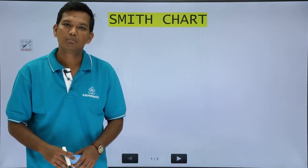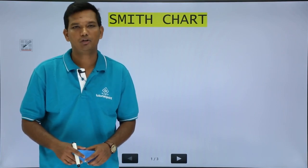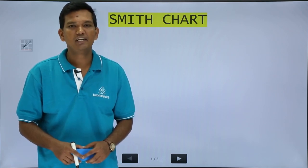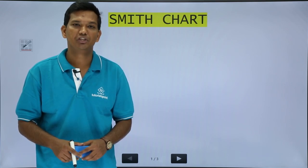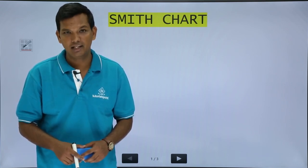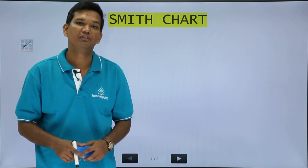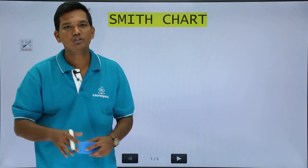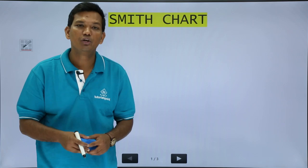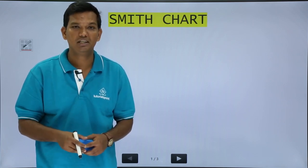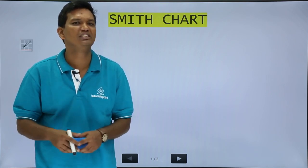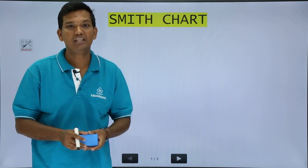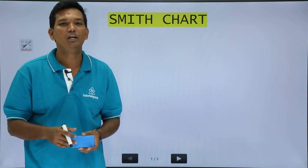In this class, we will discuss the Smith Chart, which is one of the important topics of transmission lines. When dealing with transmission lines, we have to find input impedance, reflection coefficient, voltage standing wave ratio, the length at which you have voltage maxima, and the length at which you have current maxima. When load impedance is complex, the computation becomes tedious. The Smith Chart provides a graphical method to solve all those things easily.